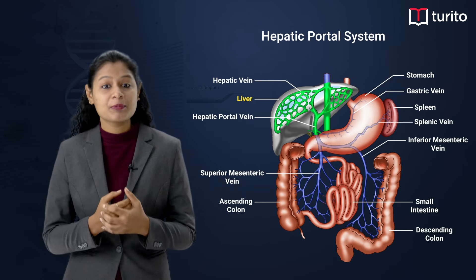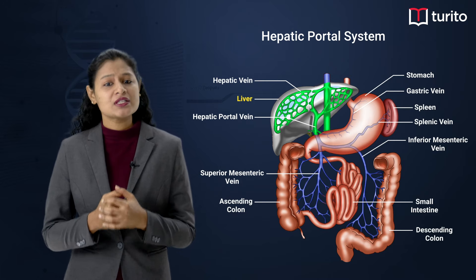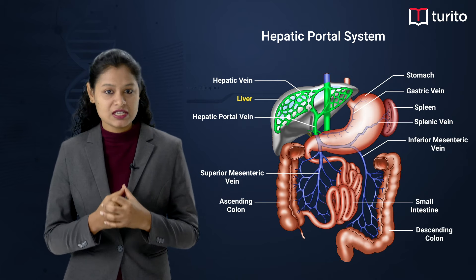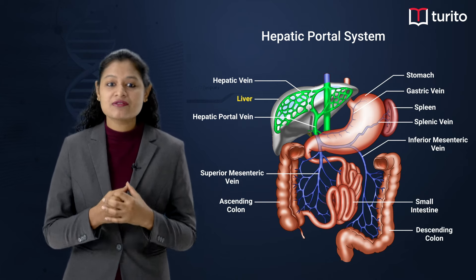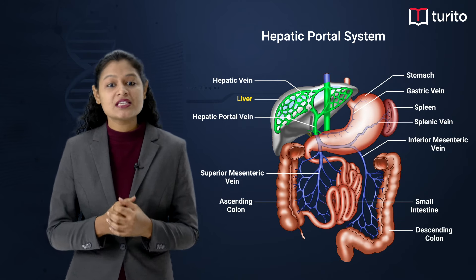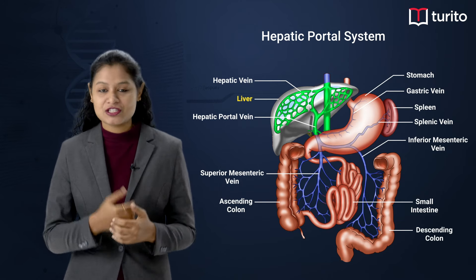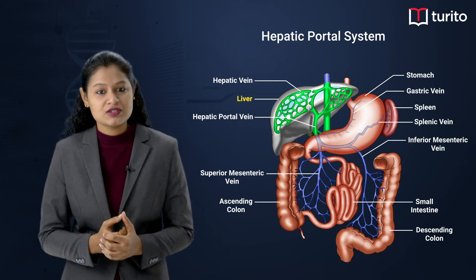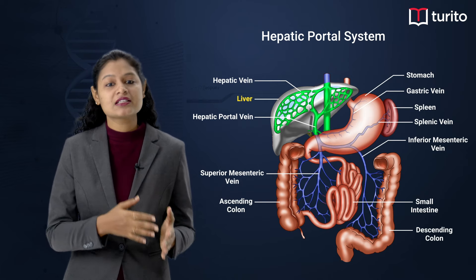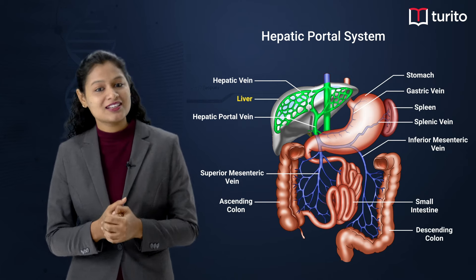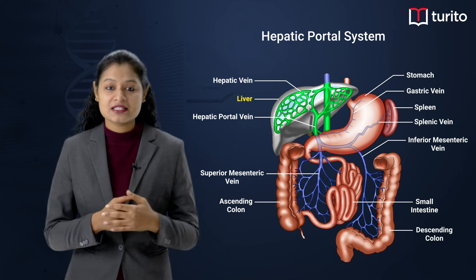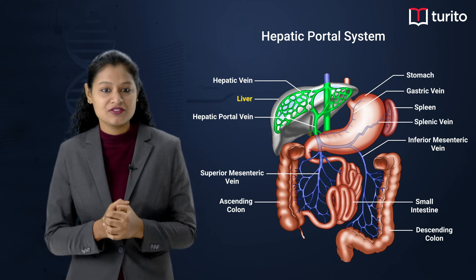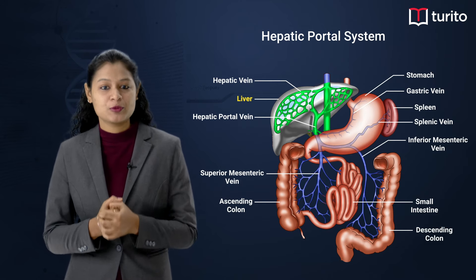Inside the liver, the absorbed nutrients from the stomach are present in the deoxygenated blood. This blood is first received by the liver, where ammonia is converted into urea. Also, if there is excess glucose present in the blood, it can be converted into glycogen and stored in the liver. So before the blood is sent to the heart, further detoxification occurs inside the liver with the help of the hepatic portal vein.